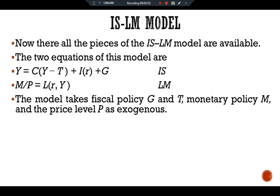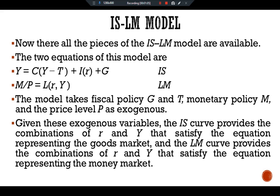The model takes fiscal policy variables G and T, monetary policy M, and the price level P as exogenous variables. Given these, the IS curve provides the combination of interest rate and output that satisfies the goods market equation, and the LM curve provides the combination that satisfies the money market equation.